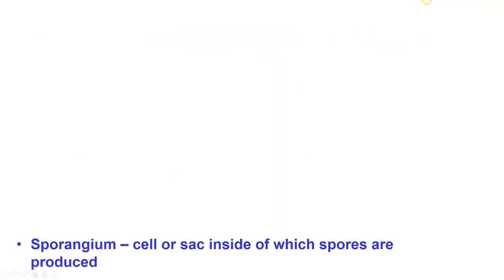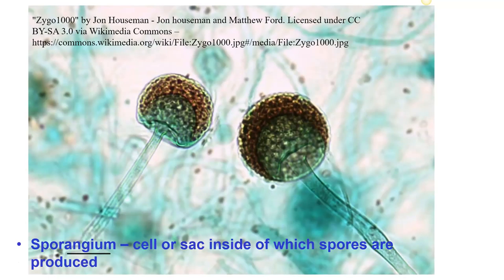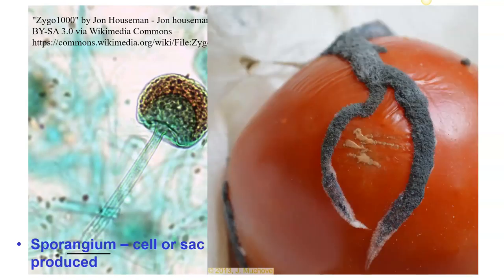We could have a sporangium, which is a cell or sac inside of which spores are produced. Sporangia are quite common. These are sporangia of Rhizopus — you can see the hyphae coming up, the hyphae are coenocytic, and on top there is a little cell inside which all these tiny single-celled spores are produced. You've most likely seen Rhizopus as fuzzy material on a tomato — that furry material is fungal hyphae, with little white dots being the sporangia starting to form.